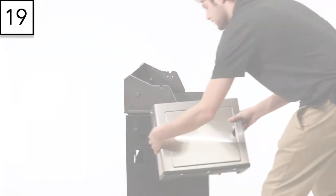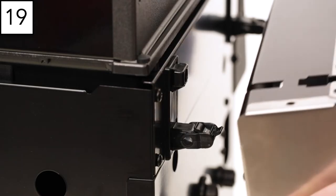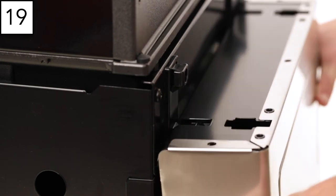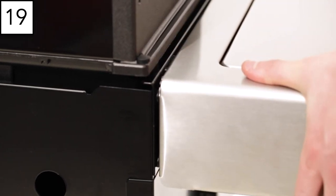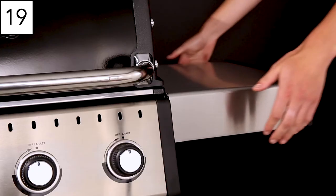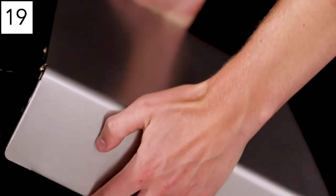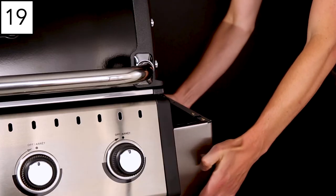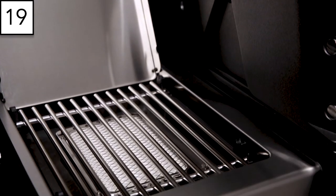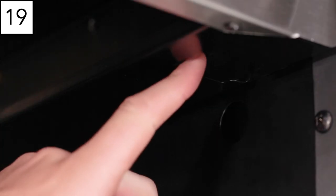Step 19. Attach the left side shelf to the shelf bracket. Fold up and lock in place with the locking tabs. The side shelves have been designed to fold down for easy and convenient storage. If your BBQ grill model has a side burner, be sure to lock it in the upright position.